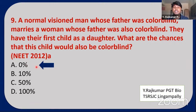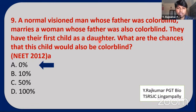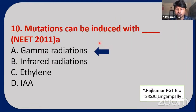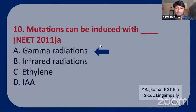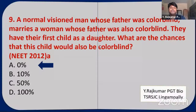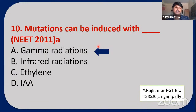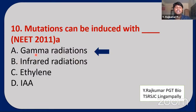Daughters in this case will always be carriers, not usually affected persons. Next question: Mutations can be induced with gamma radiations — the answer is gamma radiations.